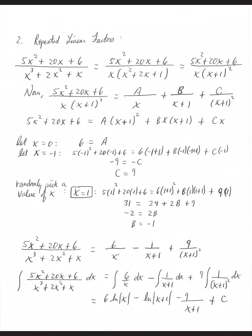We can make the x and x plus 1 factors go to 0 by choosing x equals negative 1. Plugging in: 5 times negative 1 squared plus 20 times negative 1 plus 6 totals negative 9. With A equal to 6, the A term and B term both go to 0, leaving C times negative 1. So negative 9 equals negative C, and therefore C equals 9.